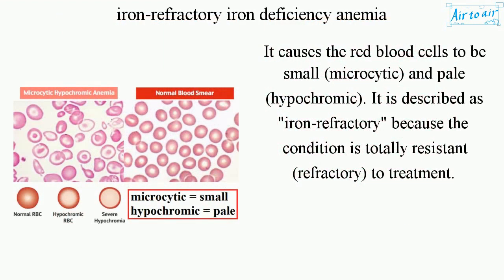It causes the red blood cells to be small (microcytic) and pale (hypochromic). It is described as iron refractory because the condition is totally resistant — refractory — to treatment.